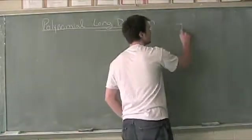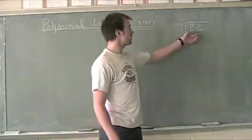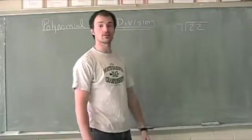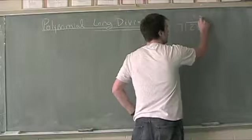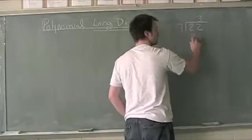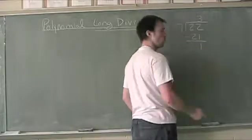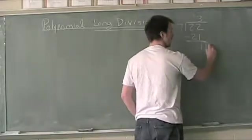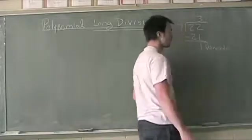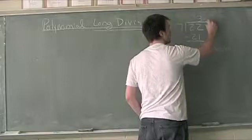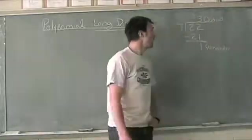We would take 7 and see how many times it would go into 22. Seven times what gives me 22? We don't have anything that brings me close without going over—that's 3. We take 3 times 7 to make 21, then subtract, and we have 1.